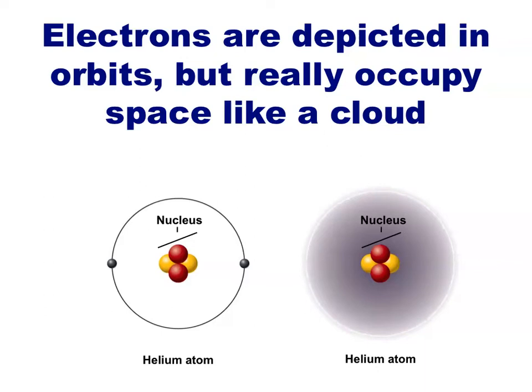Only a certain number of electrons can occupy this cloud or orbit. If more electrons are present or need to be associated with the atom, a larger orbit or cloud is required.